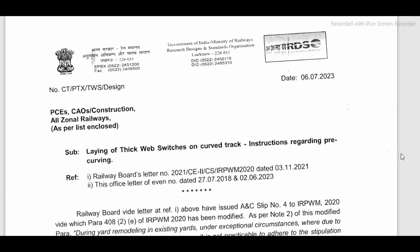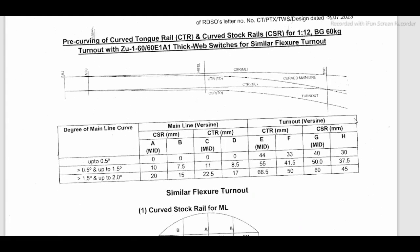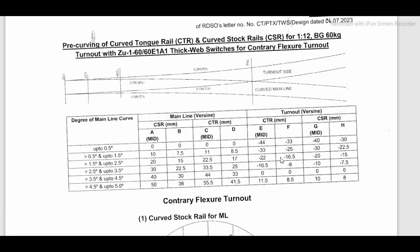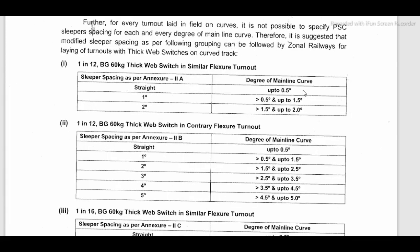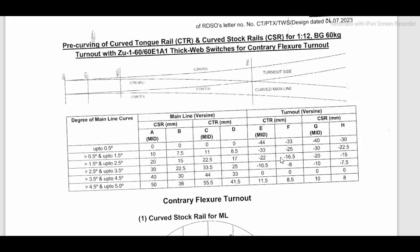Since pre-curvature has been given to both side stock rails and both side tongue rails while manufacturing, as per RDSO design, similar flexure up to 2 degrees and contrary flexure up to 5 degrees for 1 in 12 TDMS are concerned. A 1 in 12 TDMS crossover laid between curved parallel tracks at 1 degree curve means one track is similar flexure and the other track is contrary flexure, and trains are running without any problem.